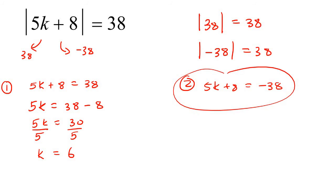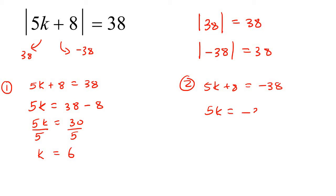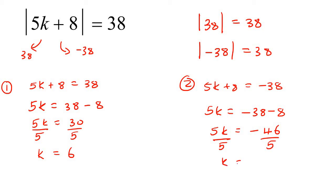For the second option, we get minus 38 minus 8, so 5k equals negative 46. Dividing both sides by 5, k equals negative 46 over 5.